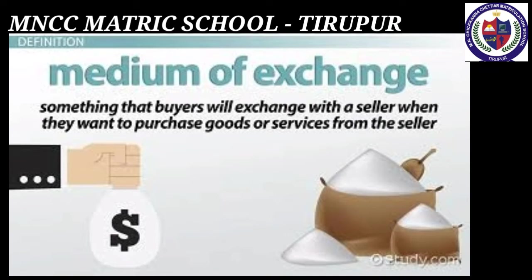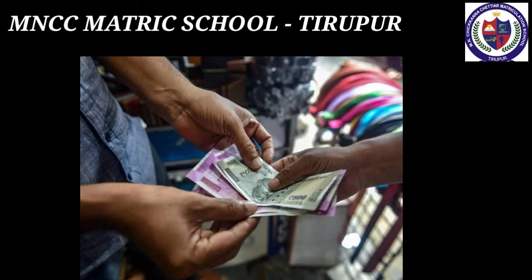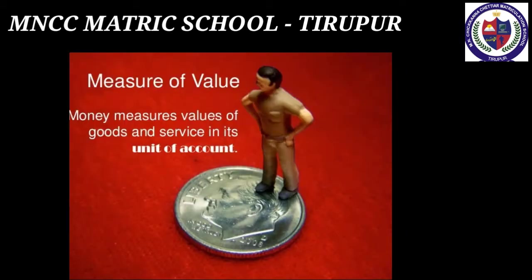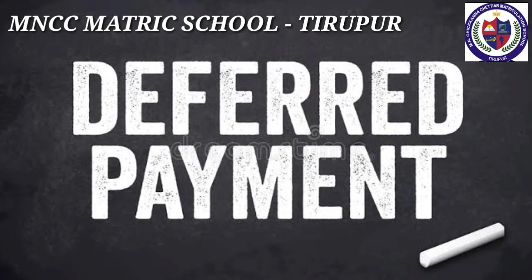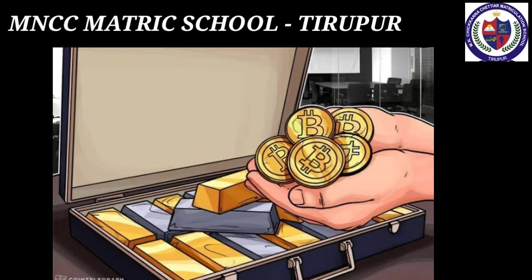As a medium of exchange, money is used to buy goods and services. As a measure of value, all values are expressed in terms of money, making it easier to determine the rate of exchange between various types of goods and services. As a standard of deferred payment, money helps with future payments too — a borrower borrowing today places himself under an obligation to pay a specified sum on some specified future date.